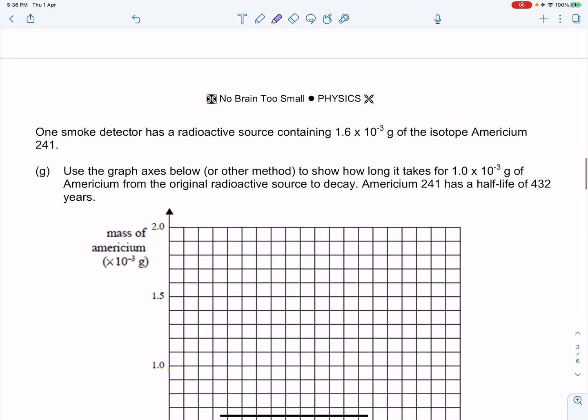One smoke detector has a radioactive source containing 1.6 × 10^-3 grams of the isotope americium 241.